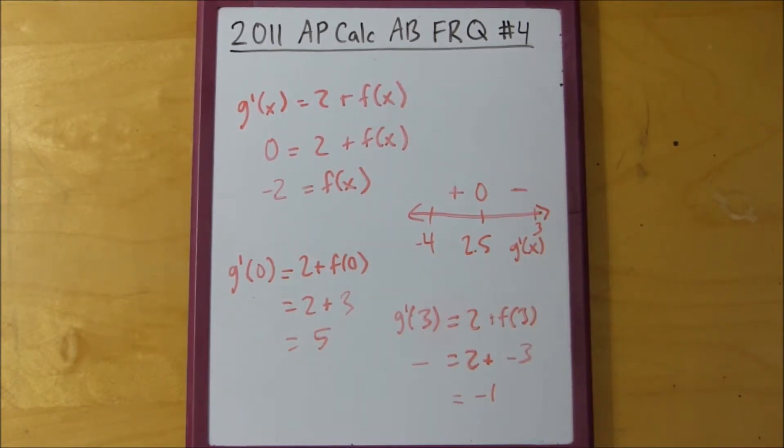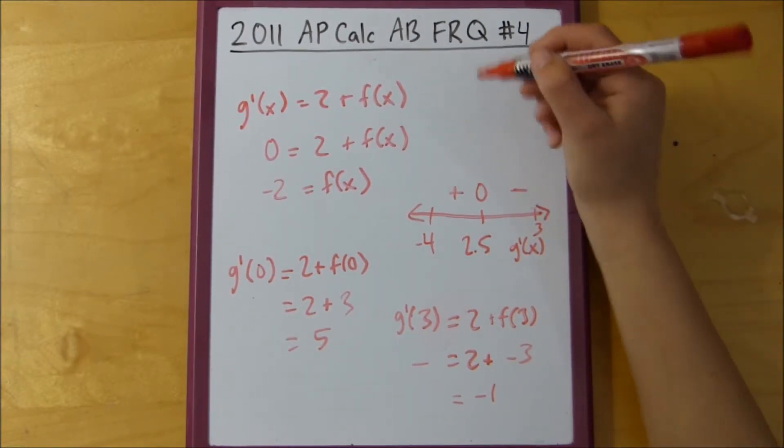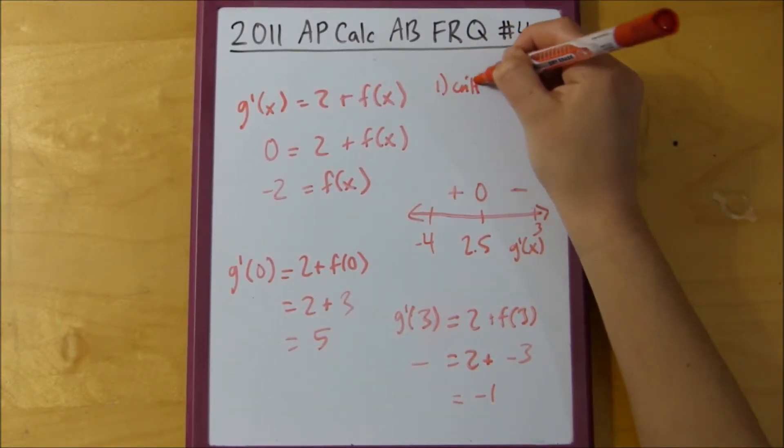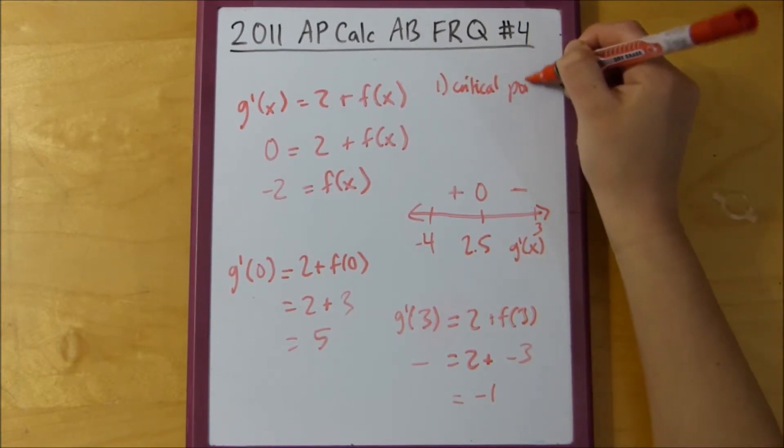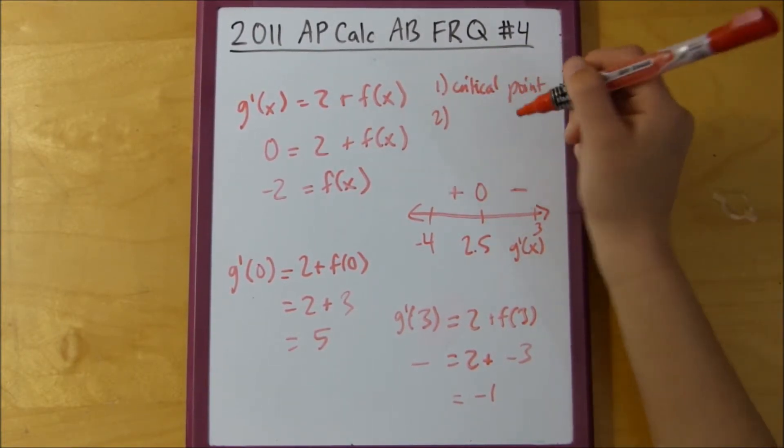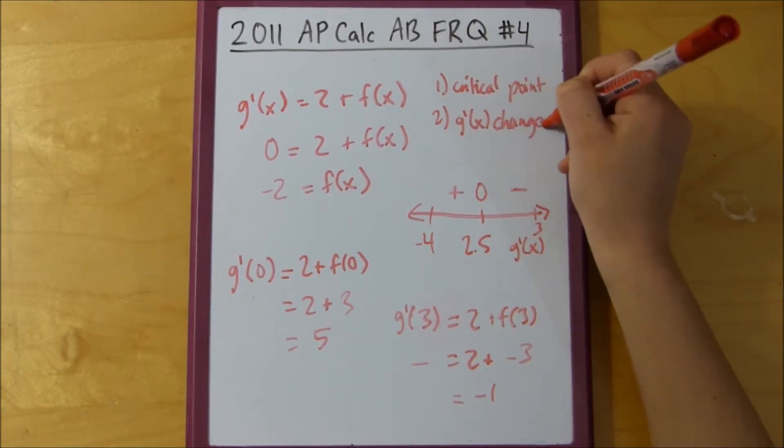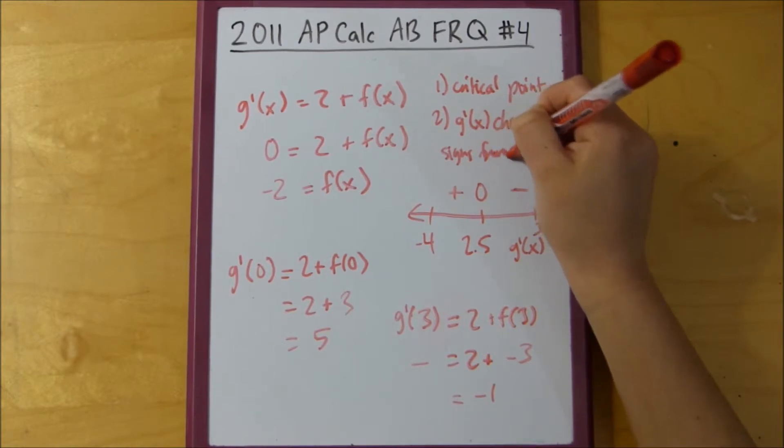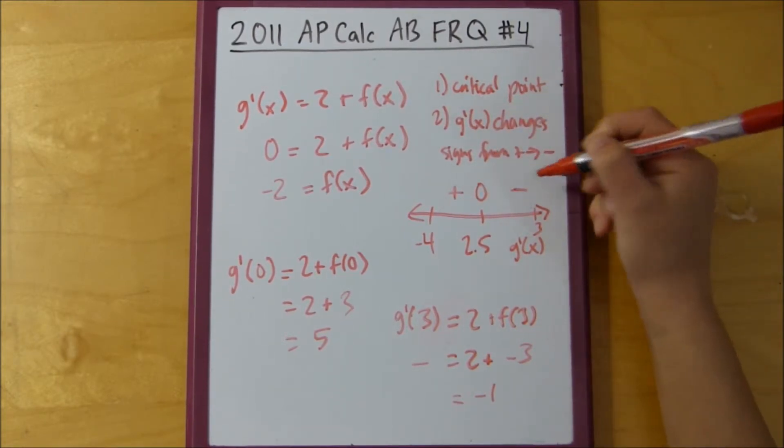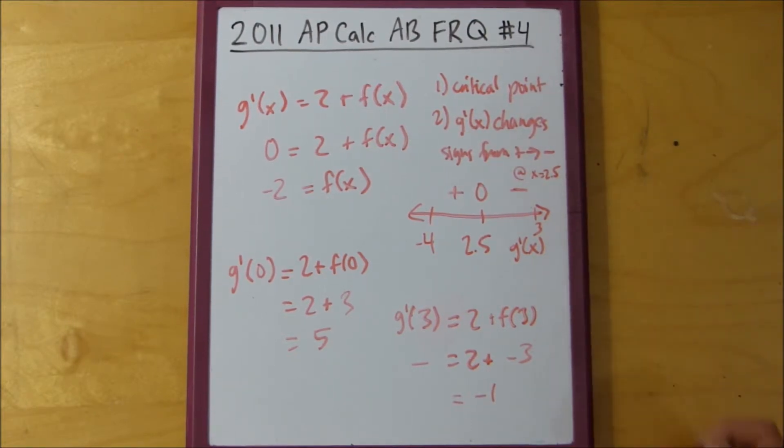So, you can say that this is an absolute maximum, because, first of all, it's a critical point. We've determined that using this. And then, we can say that g prime of x changes signs from positive to negative at x equals 2.5. So, we've determined that x equals 2.5 is the place where g has an absolute maximum. And this will be your justification.